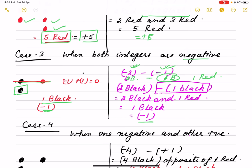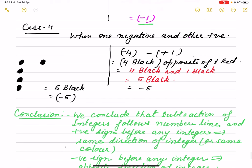Here also I have written this. Last case is 4th case, when 1 negative and other positive. First one is negative, other is positive. Minus 4, that means 4 black. Plus 1, 1 red. But which sign is there? Minus sign, so opposite of 1 red will become 1 black. So 4 black and again 1 black becomes 5 black. It is 5 black. So we have minus 4 minus of this will become minus 5.